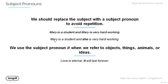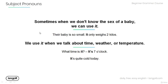'She' refers to Mary. Also note that we use the subject pronoun 'it' to refer to objects, things, animals, or ideas. For example: 'Love is eternal, it will last forever.' The pronoun 'it' refers to the word 'love'.